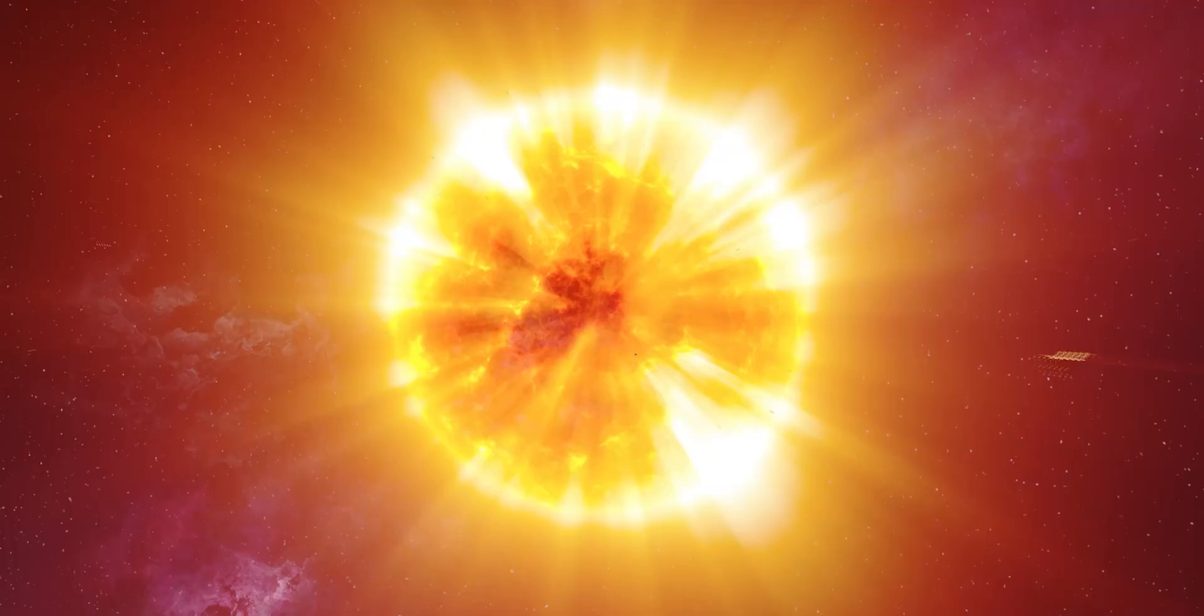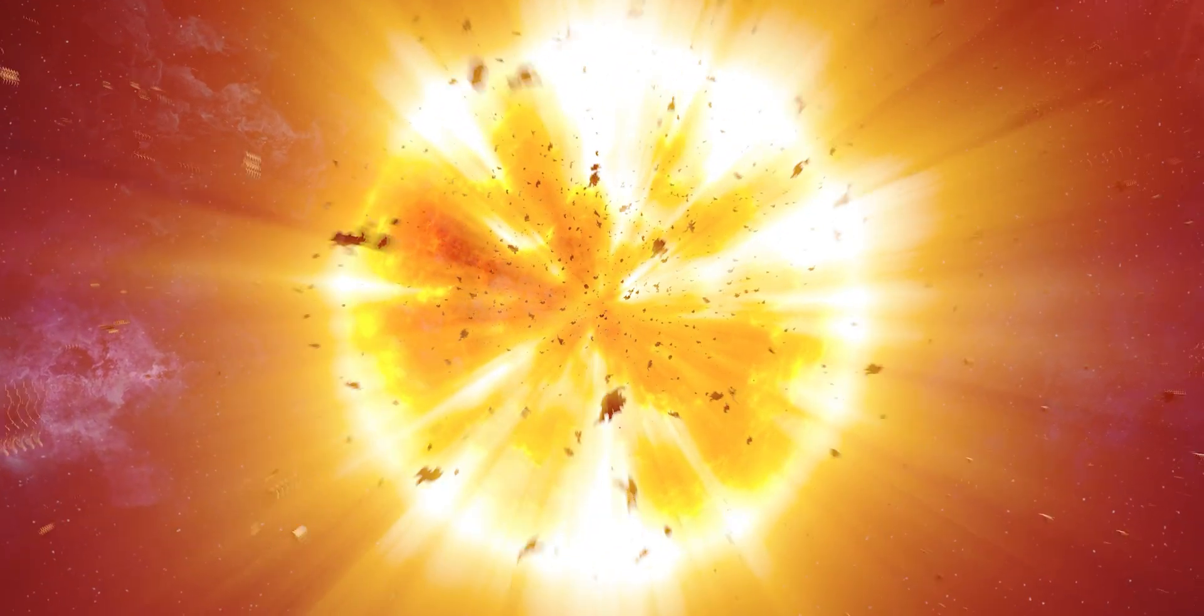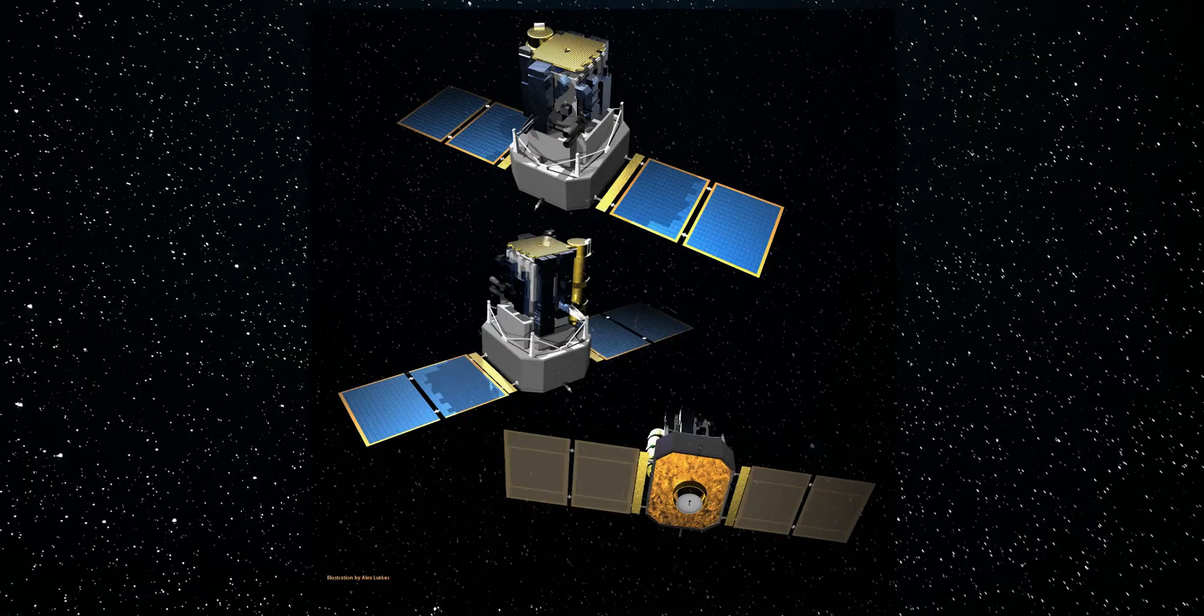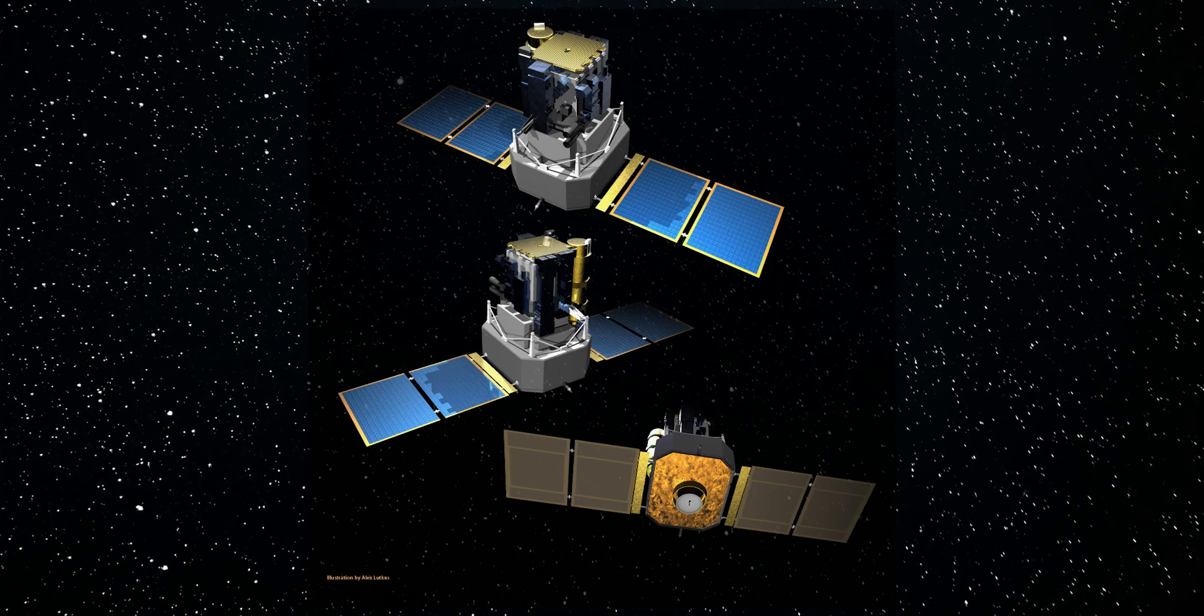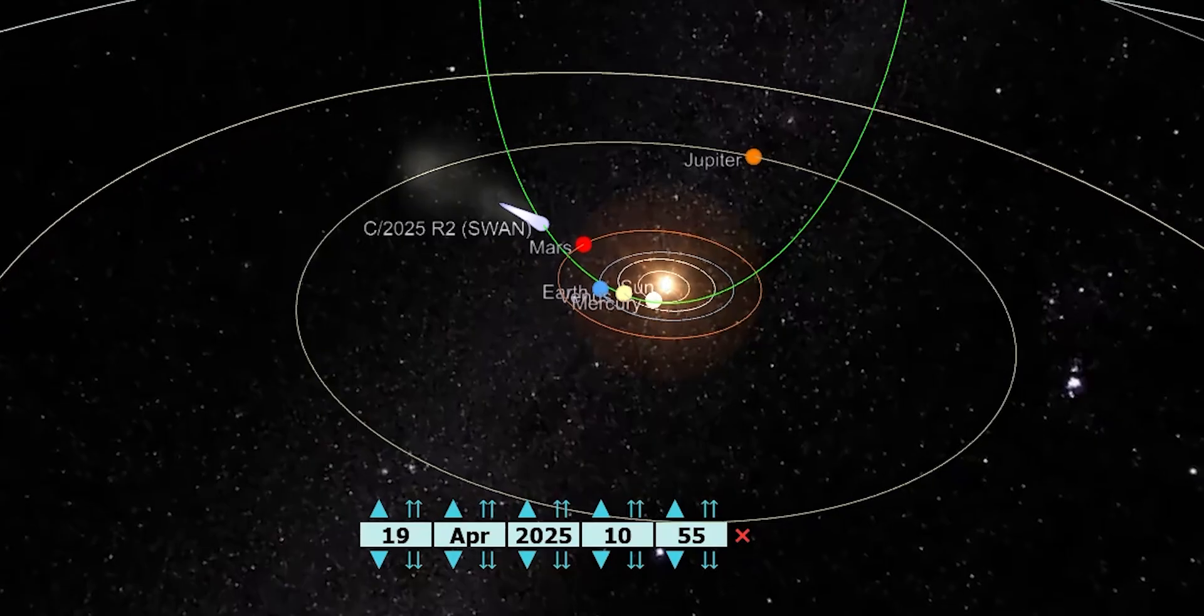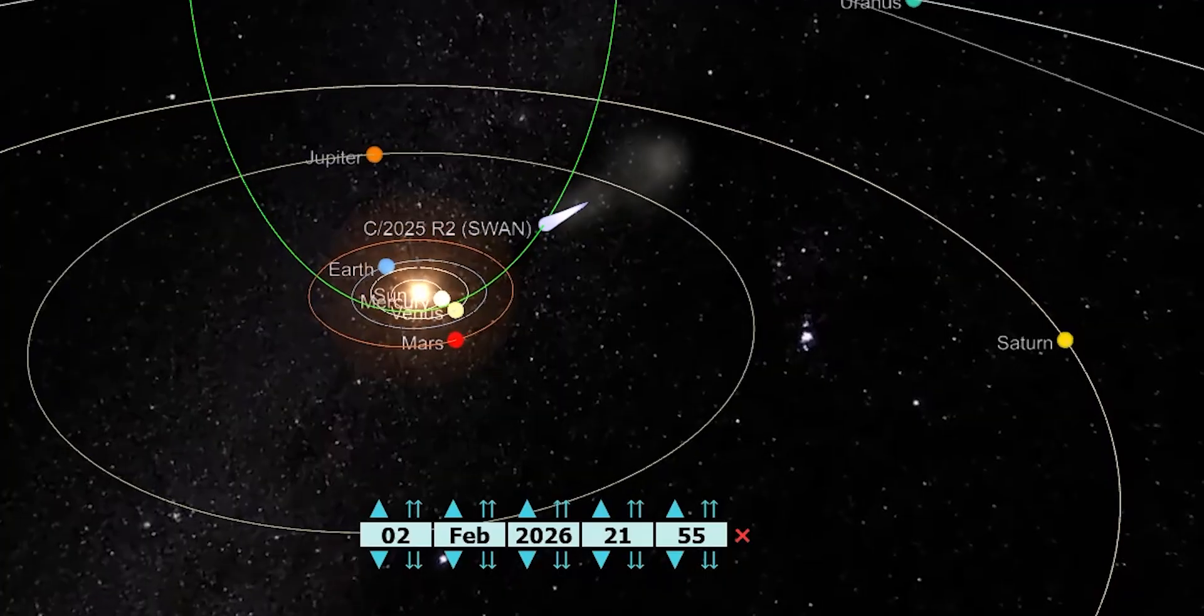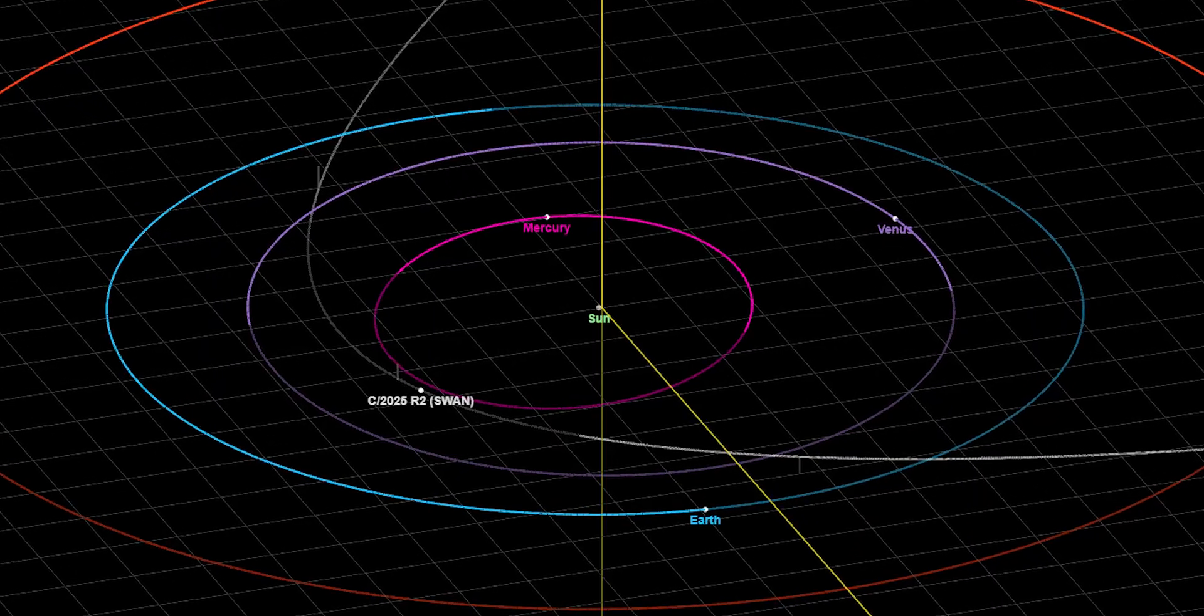The confirmation took longer. Because SWAN was so close to the Sun, Earth-based observatories couldn't look directly. For weeks, the comet had been hidden inside the daylight, invisible to every optical survey on the planet. Only SWAN's ultraviolet eyes, orbiting beyond Earth's atmosphere, could detect it. By the time the discovery notice reached the Minor Planet Center, the comet had already swung past its closest point to the Sun. It was moving outbound, brighter by the hour. And the only image we had was a faint, grainy ultraviolet patch captured by a 30-year-old spacecraft. The object was cataloged as C-2025R2, SWAN.